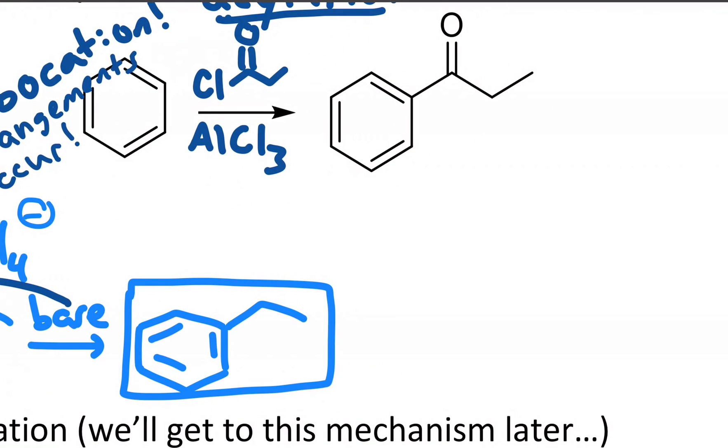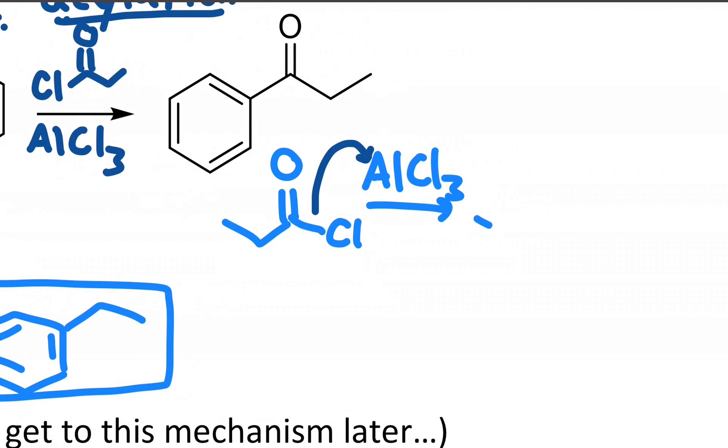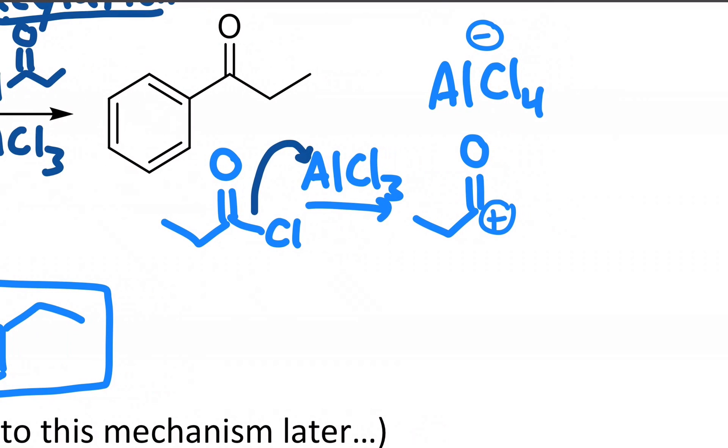And the way it happens is similarly the reagents combine first. In this case, I have a three carbon acid chloride that reacts with aluminum chloride. The aluminum acts as a Lewis acid and it strips off the chloride, leaving me with what looks like a very bad cation right on this carbon of the carbonyl in addition to the complex ion with aluminum.